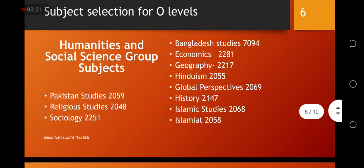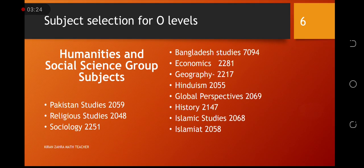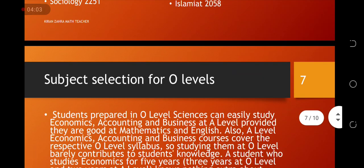Uske baad aajate hai hume humanities and social science group ki taraf. Ispe bhout saray subjects hai, like Pakistan studies 2059, religious studies 2048, sociology 2251, bangladeh studies 7094, economics 2281, geography 2217, hinduism 2055, global perspective 2069, history 2147, islamic studies 2068, islamiat 2058. Yeh tamam subjects hai.